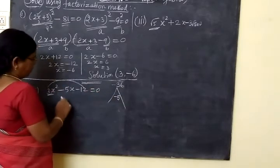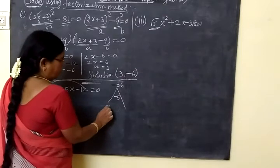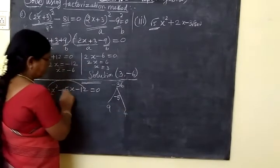9x squared minus 6 equal to 0. 3x squared minus 5 equal to 0.